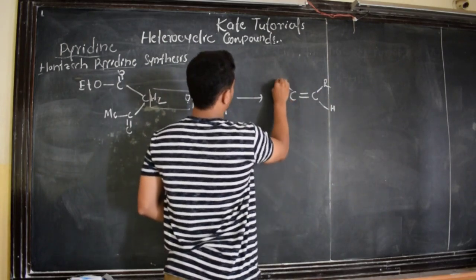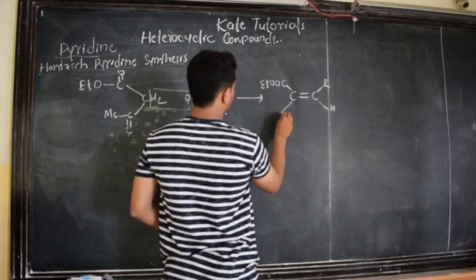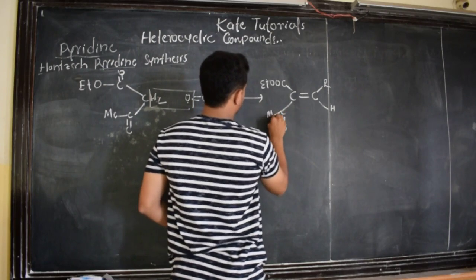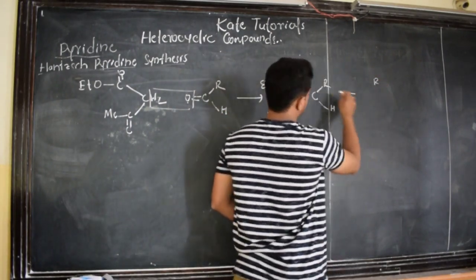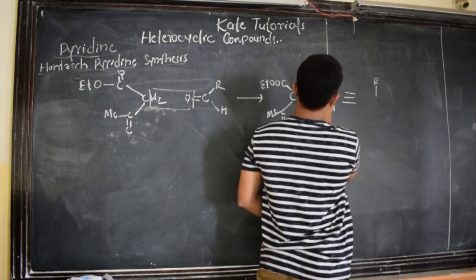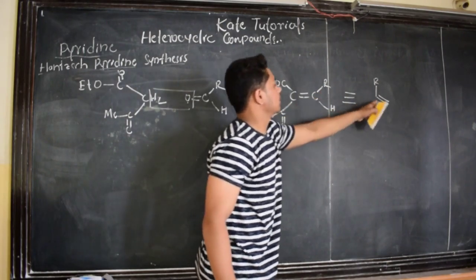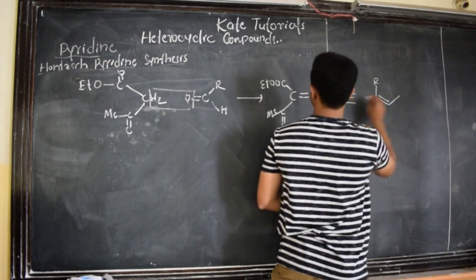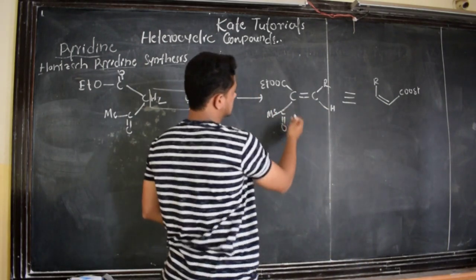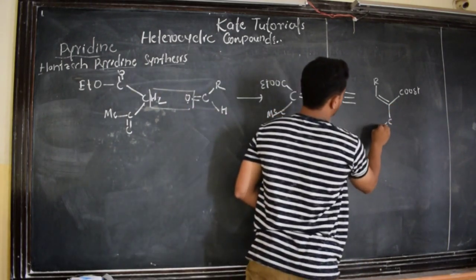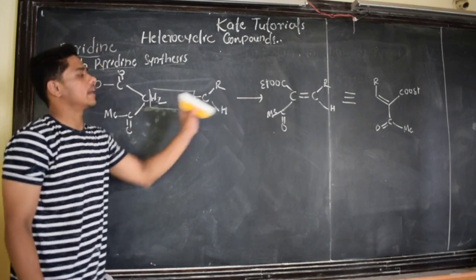Now let us concentrate on this mechanism. One molecule of EAA is taken and reacted with aldehyde (R-CHO, either alkyl or aryl). When heated, we lose one molecule of water (minus H2O), and the compound becomes: R-CH=C(COOET)-CO-CH3 — a double bond C is formed. I can write the same compound showing: R attached to carbon, carbon-carbon double bond, then COOET and C=O with methyl group.